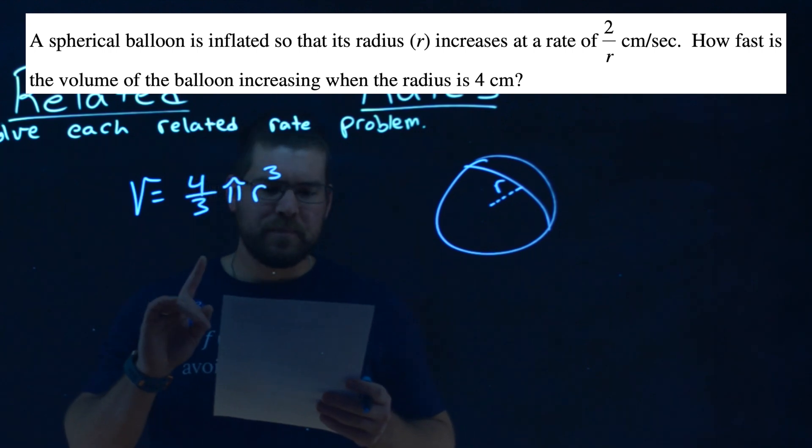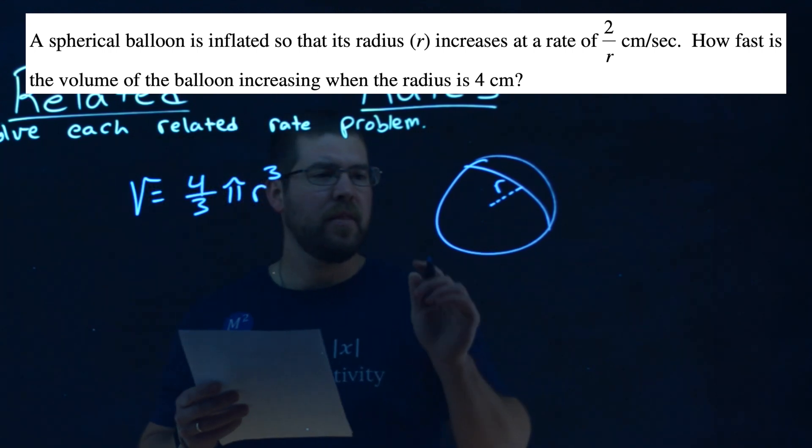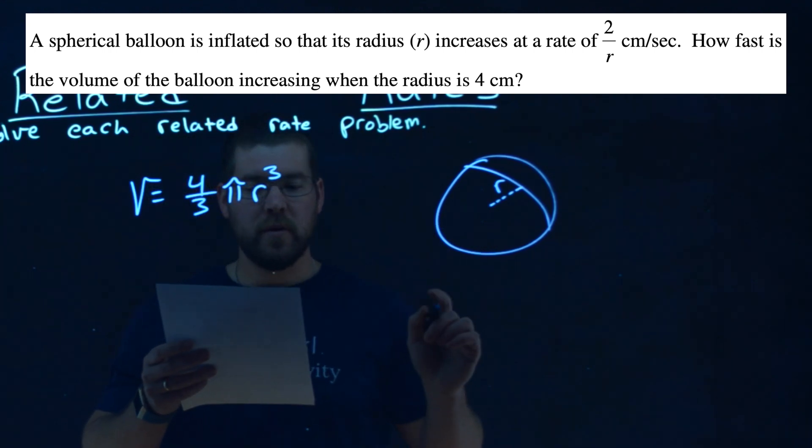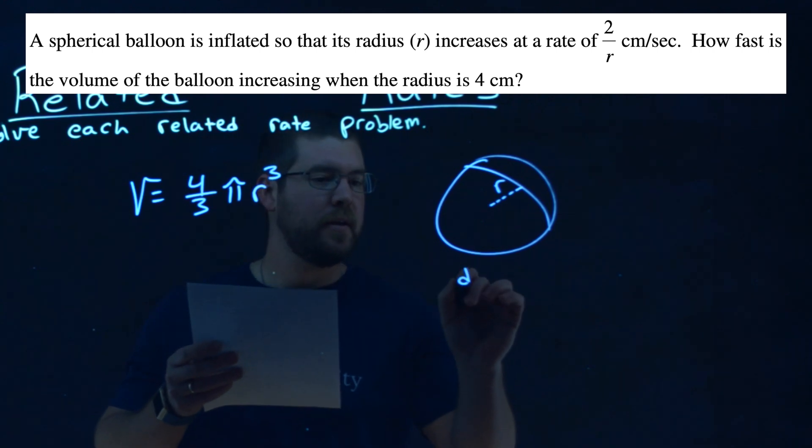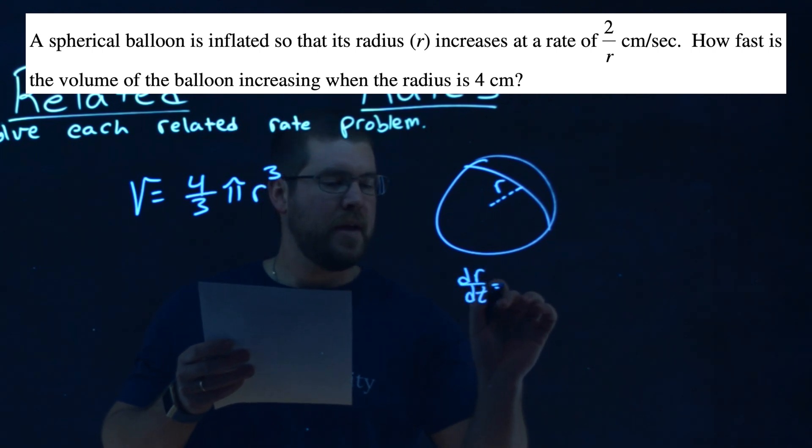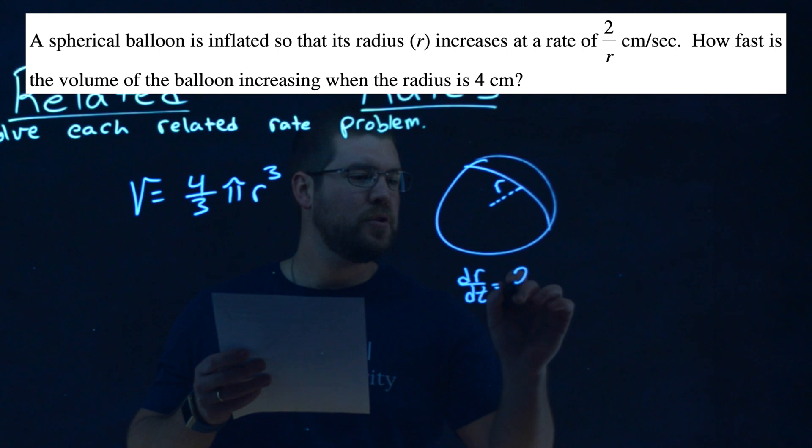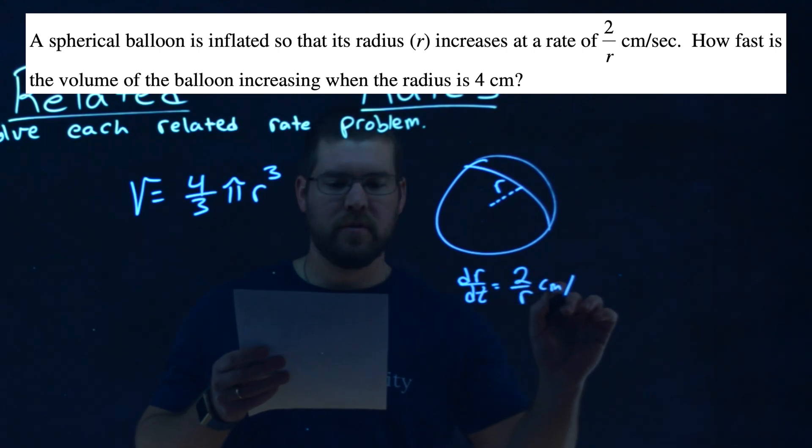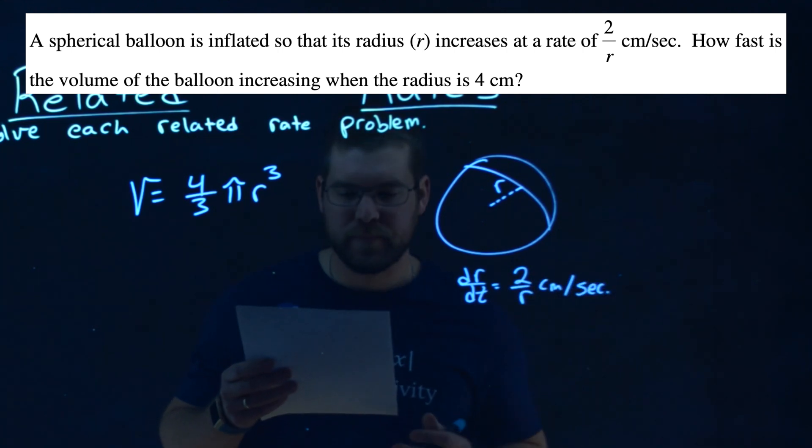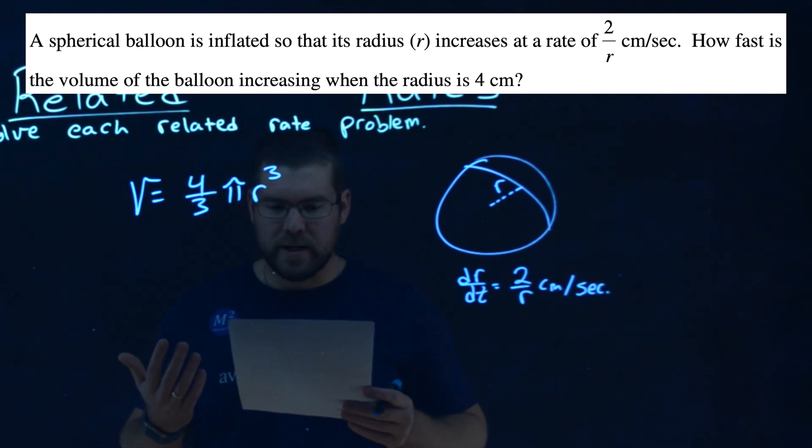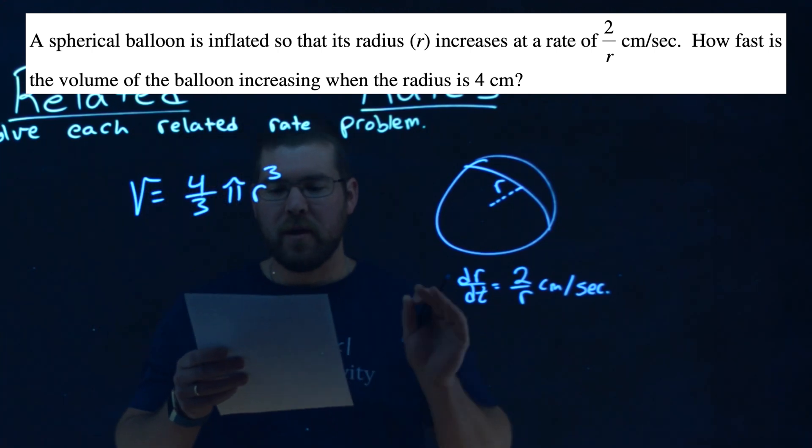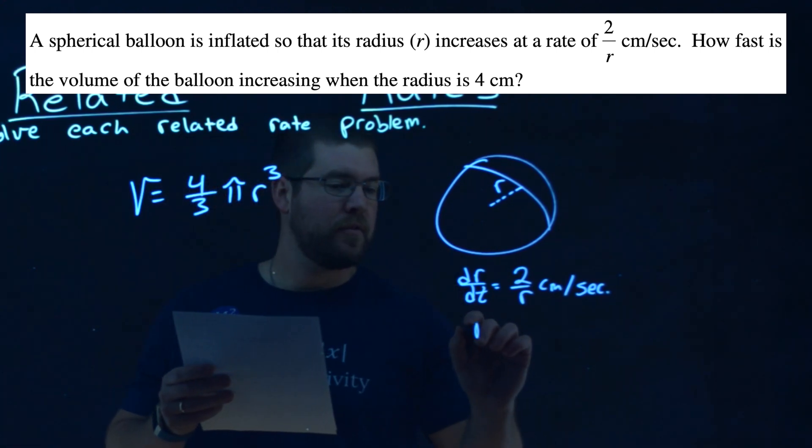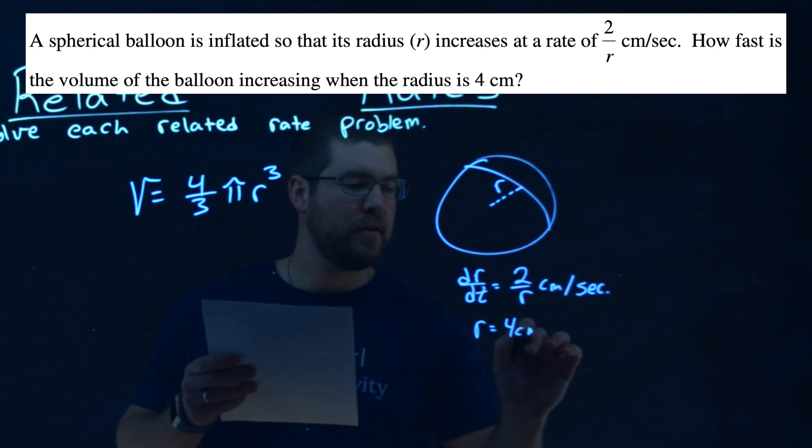All right. Well, what are they giving to us? We are given the rate at which the radius is increasing. So the rate of the radius, dr dt, is given as a rate of 2 over r centimeters per second. What else are we given? Well, we want to find what happens when the radius is 4 centimeters, so the r we're looking for is 4 centimeters.